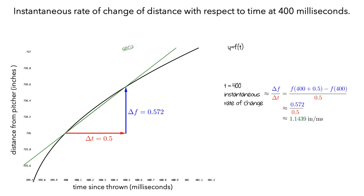The green line is called a secant line. The value we computed, 1.1439, is the slope of the secant line, and is also the average rate of change of f over the interval from 400 to 400.5 milliseconds.